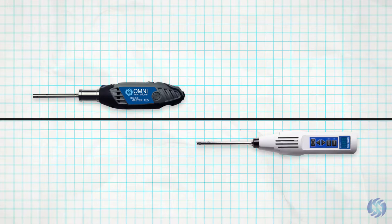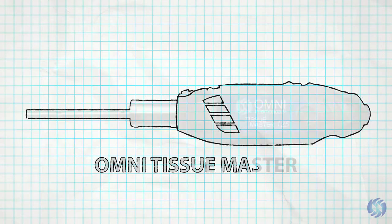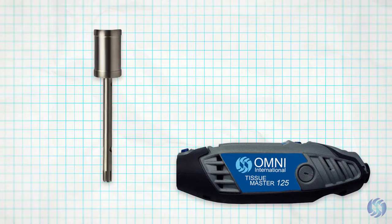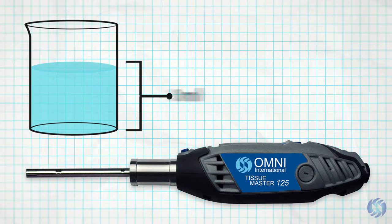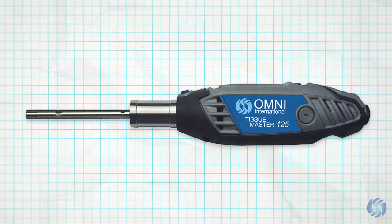The Omni TissueMaster is an economically priced homogenizer kit sold complete with a 7mm probe. The TissueMaster incorporates variable analog speed controls and can process samples in up to 100 milliliters of volume. Designed for occasional use, the TissueMaster is an ideal solution for labs on a budget.